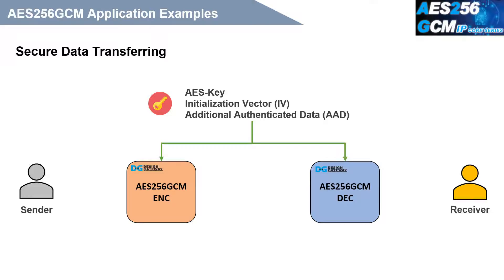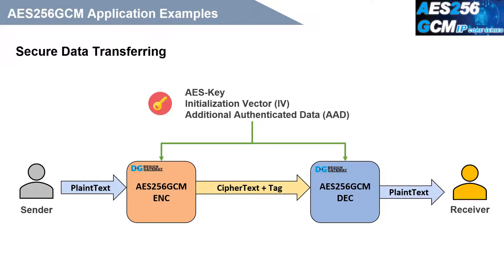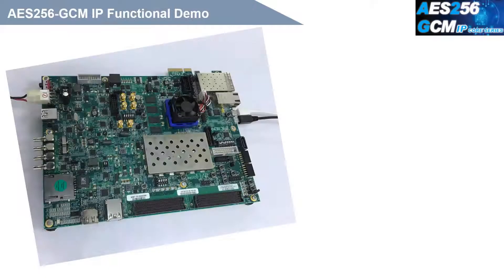The receiver uses the same AES-GCM parameters to decrypt data and uses the authentication tag to check whether the transferred data has been changed. If the tag attached with the encrypted data matches the tag generated by the receiver, it confirms that the received data came from the sender and the encrypted data has not been changed.